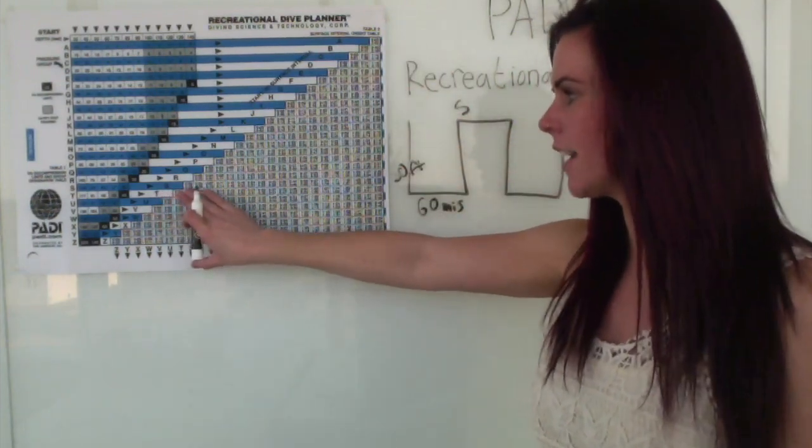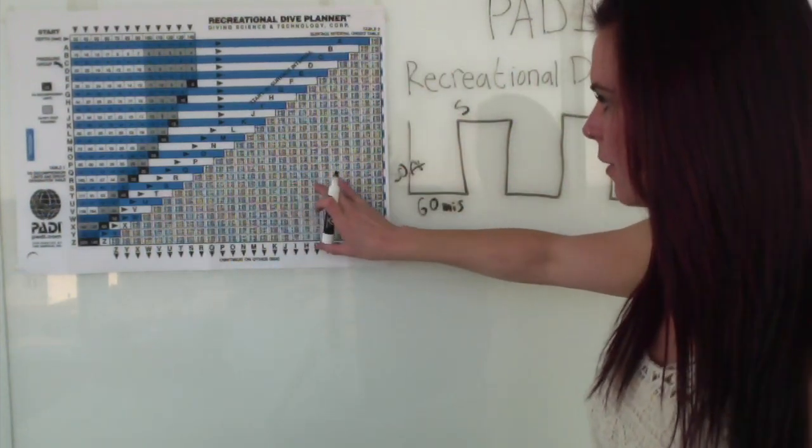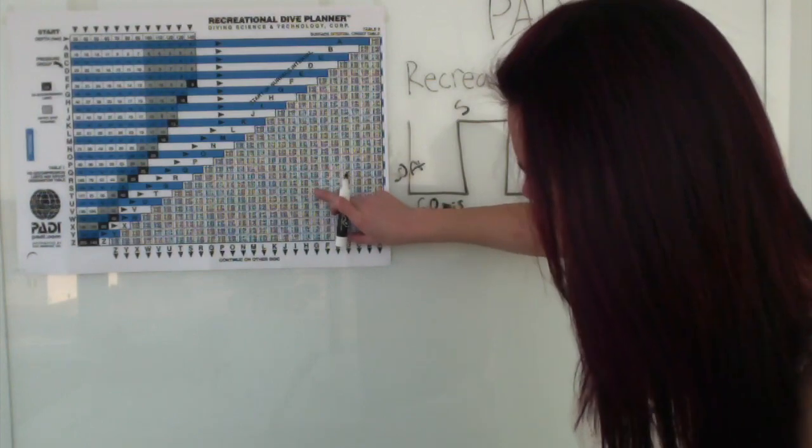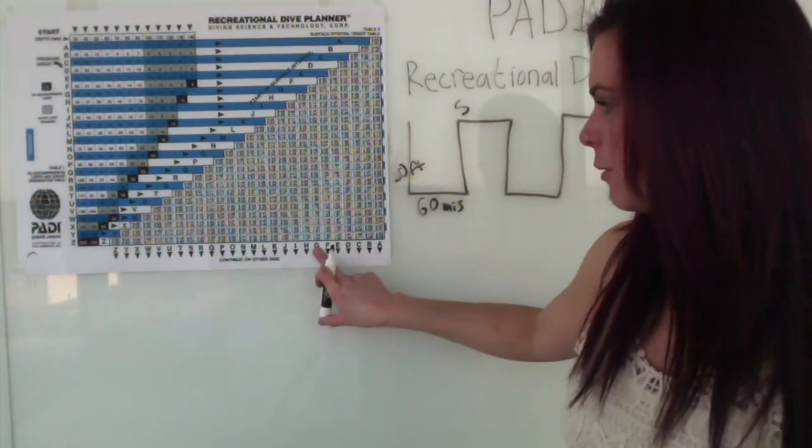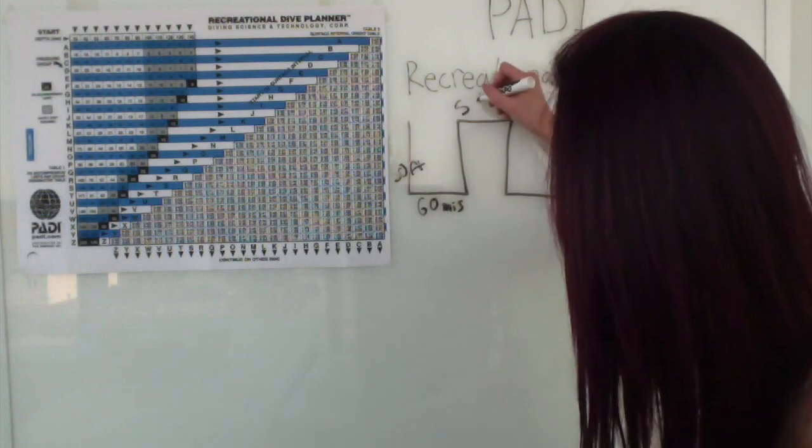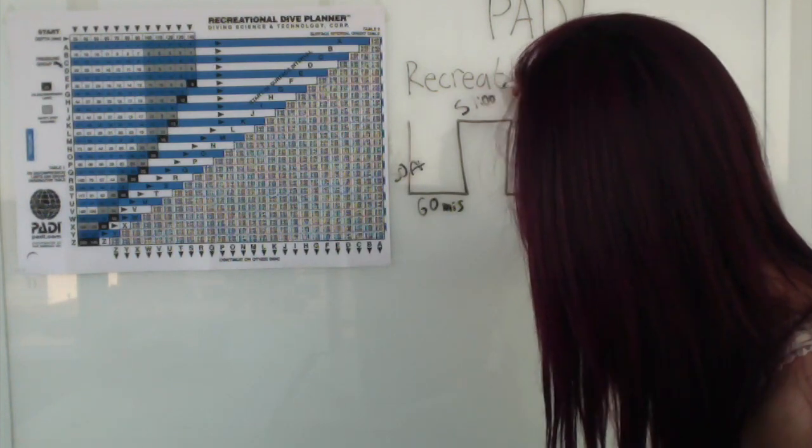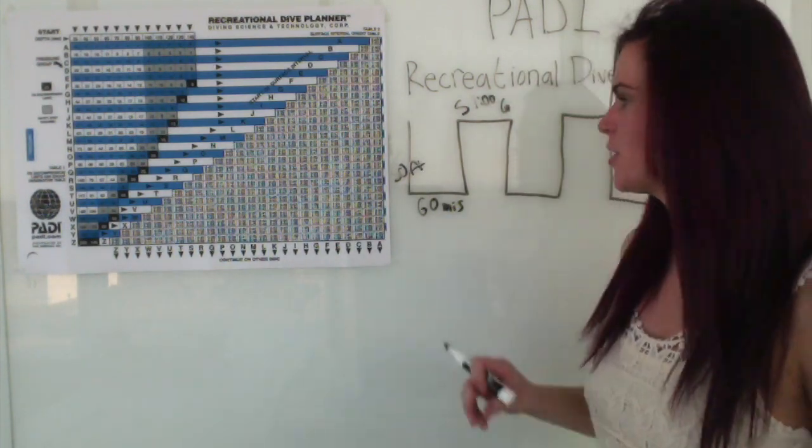Now that we're at the surface, we're going to hang out for a little while. Let's say we hang out for an hour. Go over to the time, you go down and you find your new pressure group after that hour, which is pressure group G. So we're at the top for one hour and our new pressure group after that hour is pressure group G.